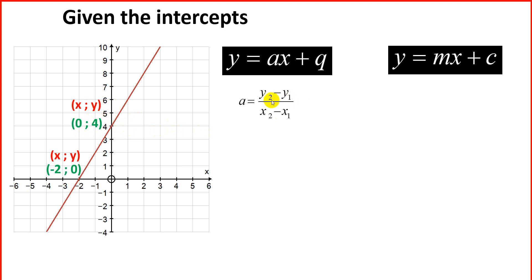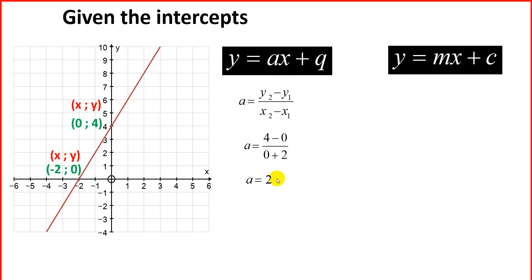We're now going to use the gradient formula: subtract the y values, subtract the x values. So we take 4 minus 0, divided by 0 minus minus 2, which makes this a plus 2. That gives us 4 divided by 2, so a equals 2, which is also m, your gradient. The gradient is 2, whether you're using the first or the second formula. The next thing we need from the graph is the y-intercept.